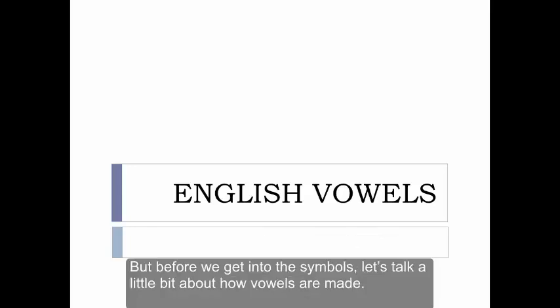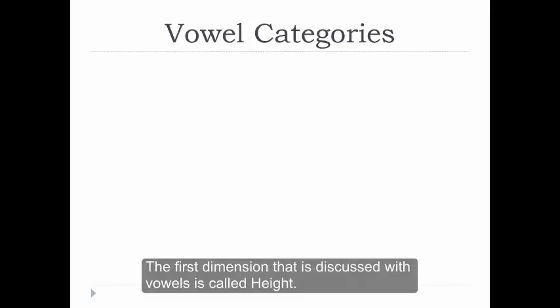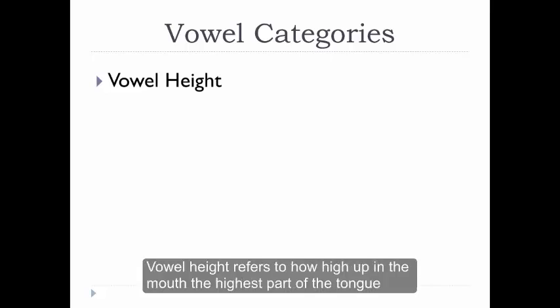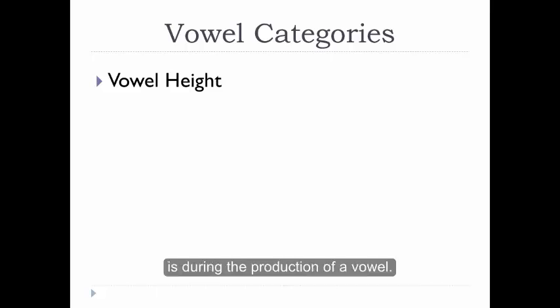But before we get into the symbols, let's talk a little bit about how vowels are made. The first dimension that's discussed with vowels is called height. Vowel height refers to how high up in the mouth the highest part of the tongue is during the production of a vowel.